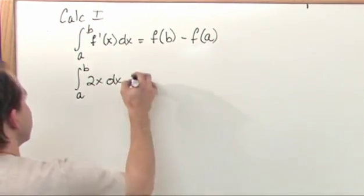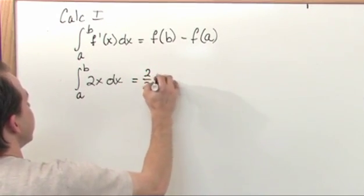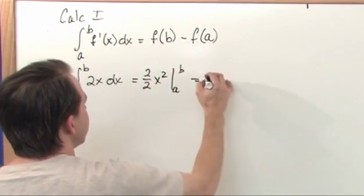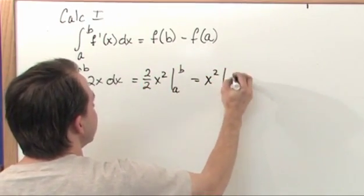Well, what's the integral of this? It's going to be 2 halves x squared from A to B, which is, just doing the math here, x squared from A to B.